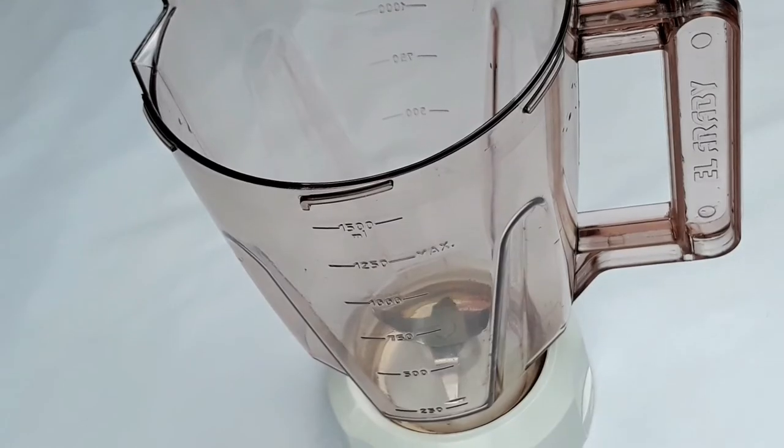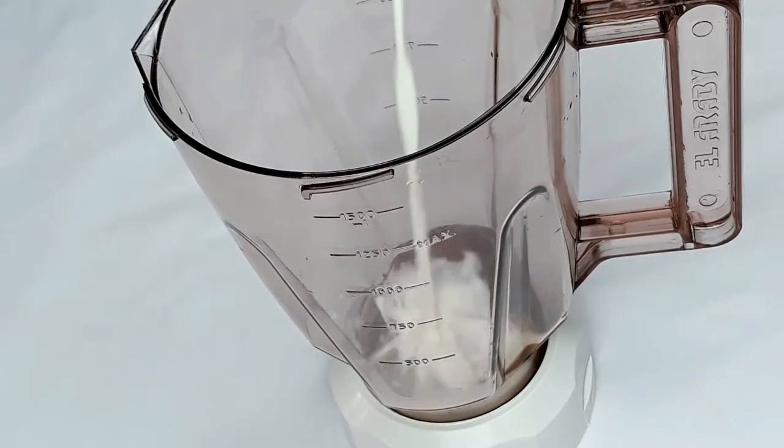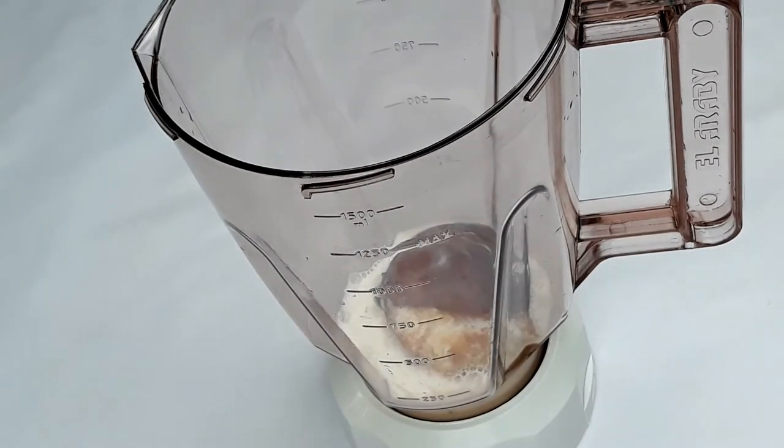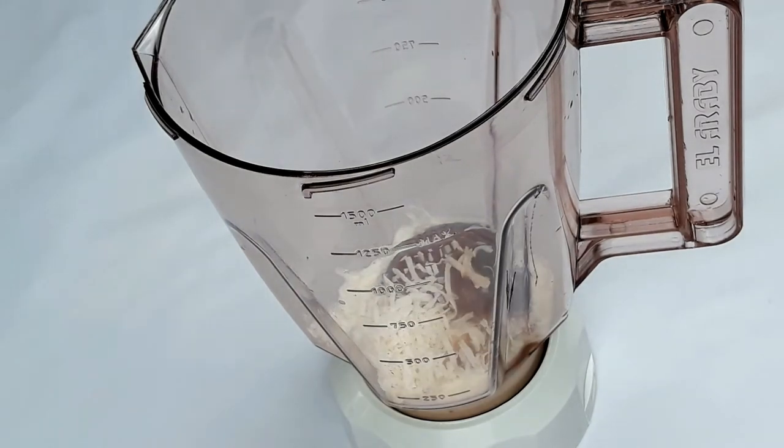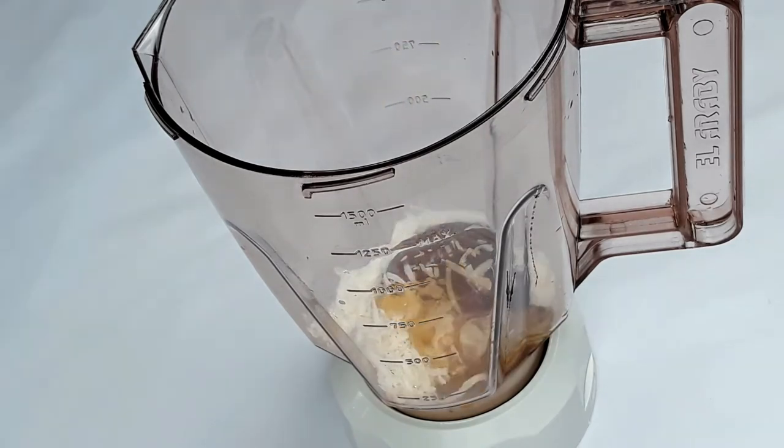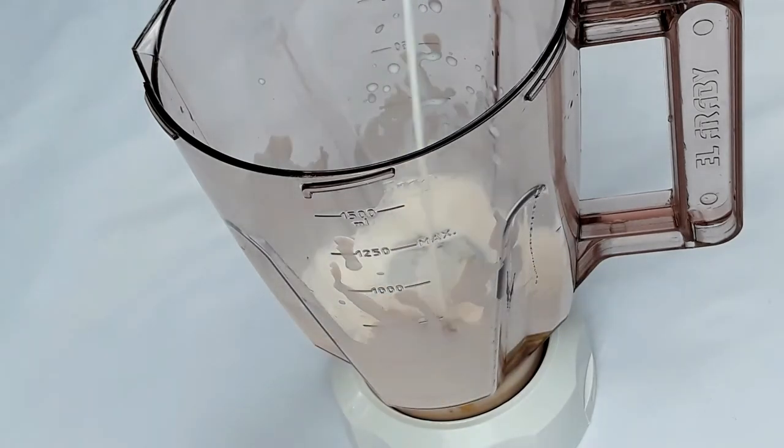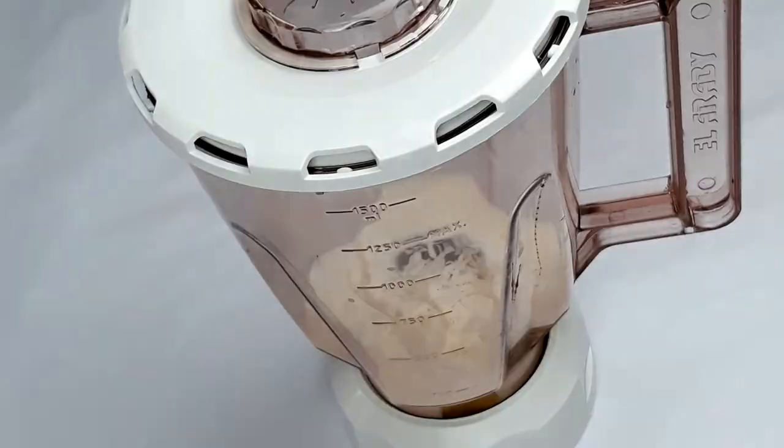Then we start preparing the second layer. We put a large peach, half a cup of coconut milk or water, 1 tablespoon of coconut, a tablespoon of honey, and add another half cup of coconut milk.